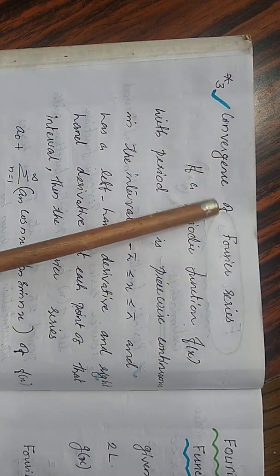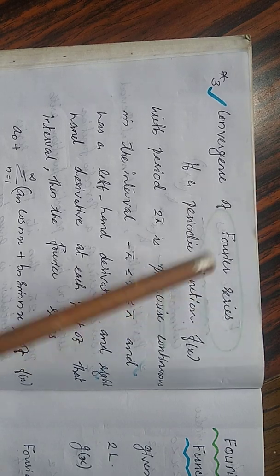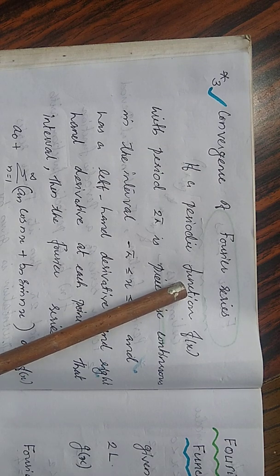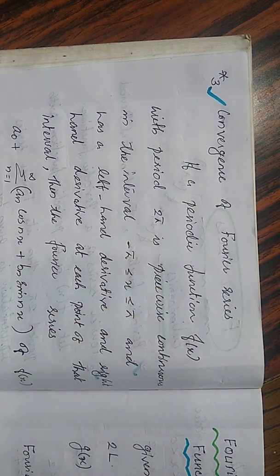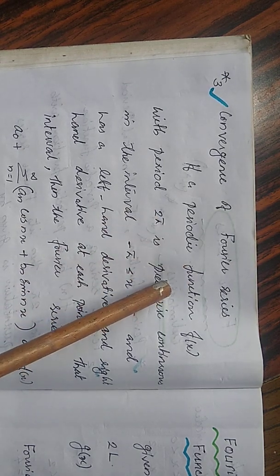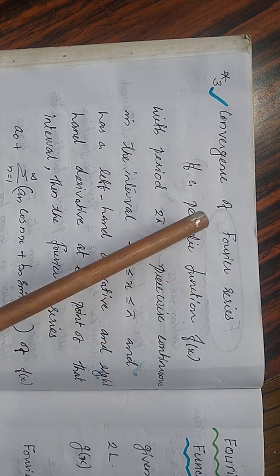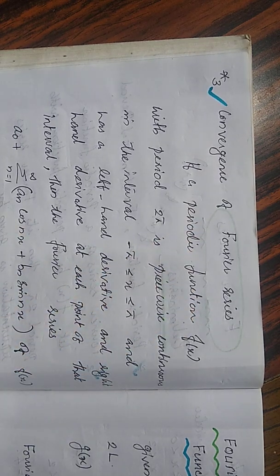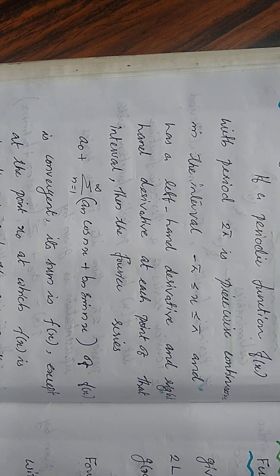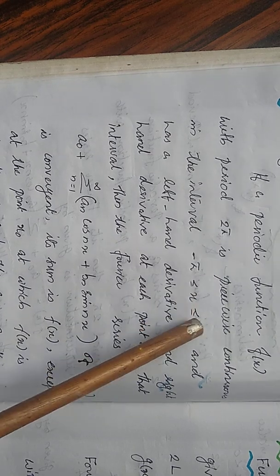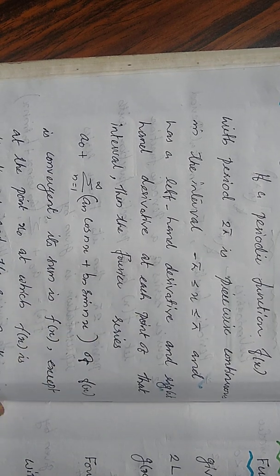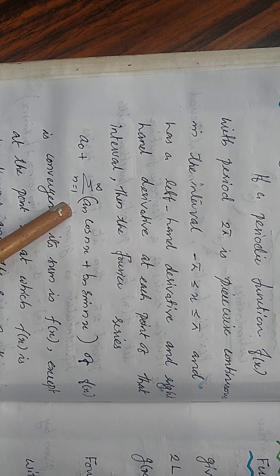Next we want to check the convergence of a Fourier series — when does a Fourier series converge? In the introduction I already stated that when we find the Fourier series for a function, we are approximating that function in terms of the basis functions sin x and cos x. It can be shown that when the function is piecewise continuous in the interval −π to π and its left-hand and right-hand derivatives exist at all points of that interval, then the Fourier series is convergent.